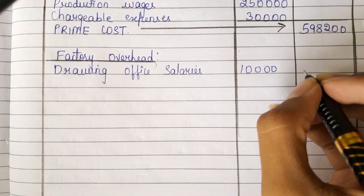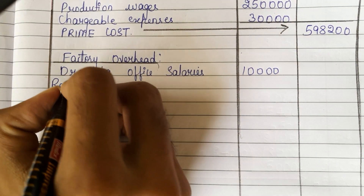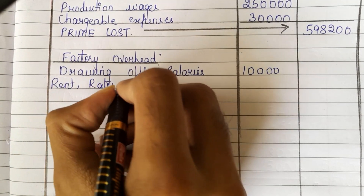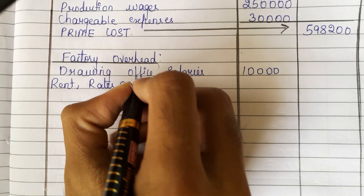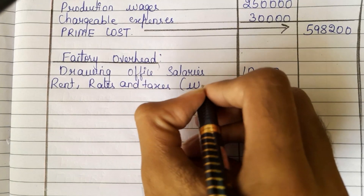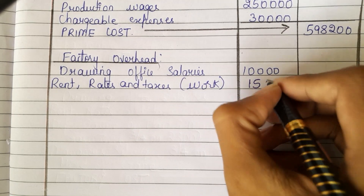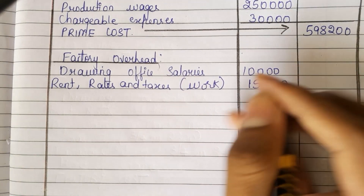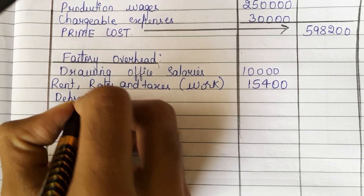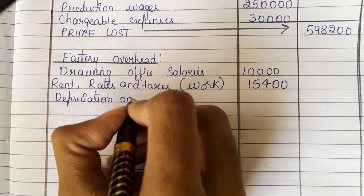Next, we are having rent, rates and taxes related to work: 15,400. Next, we have depreciation on plant and machinery.